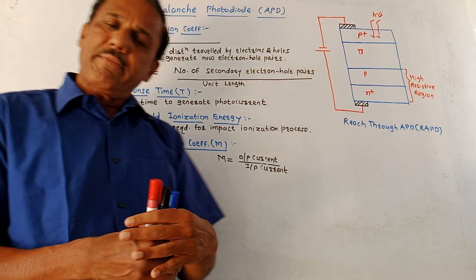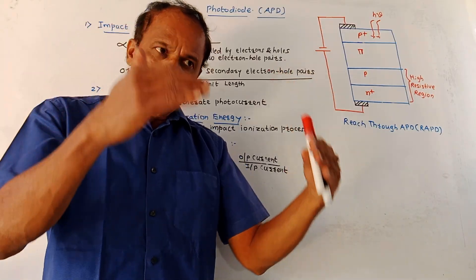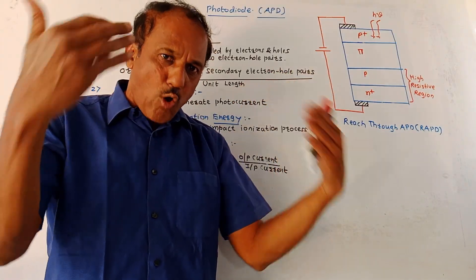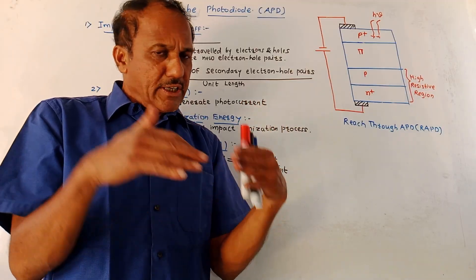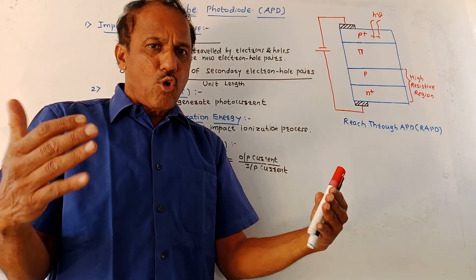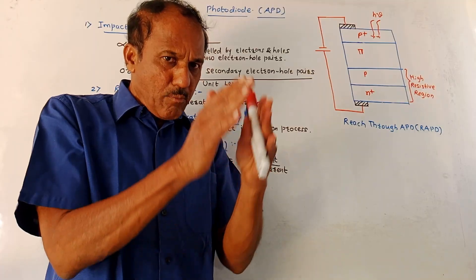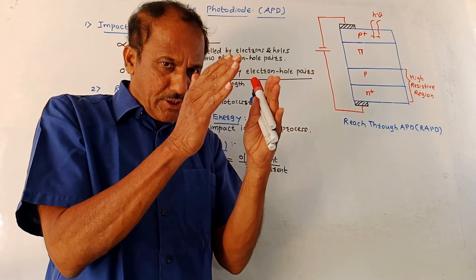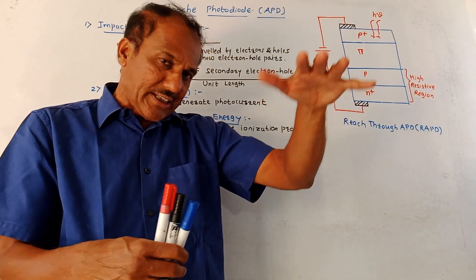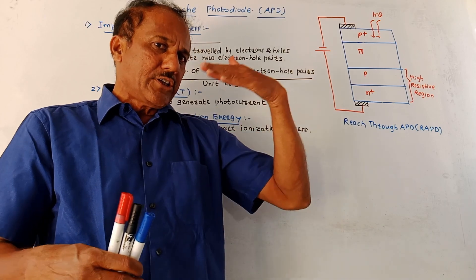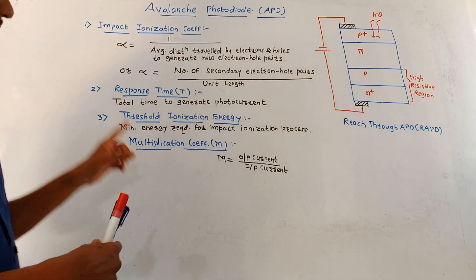Next is the response time. As the name indicates, it is the time required to produce the output. In case of APD, the response time is more because a certain amount of time is required for the generated charge carriers to travel a certain distance and again generate new charge carriers. So response time is more.